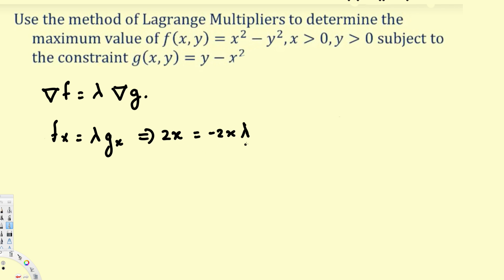From this equation we can solve for lambda. If we bring the negative 2x to the other side, they divide each other and we get lambda equals negative 1.